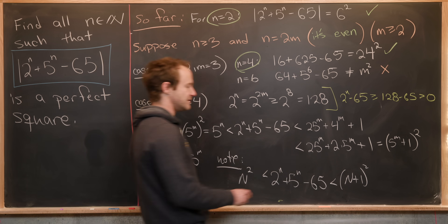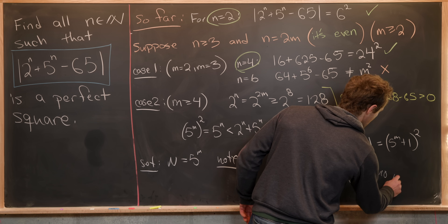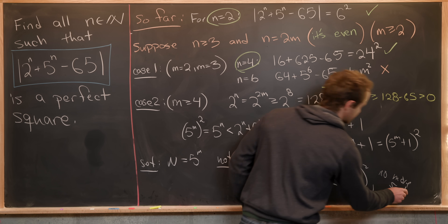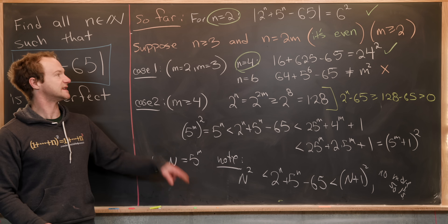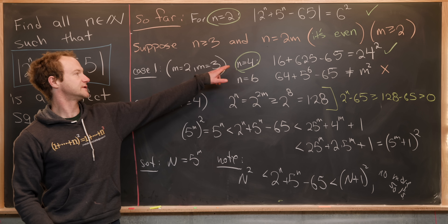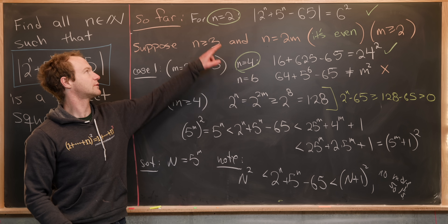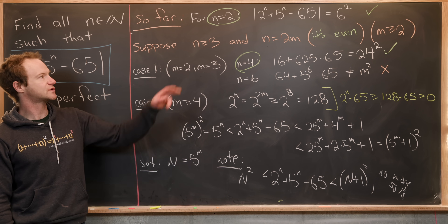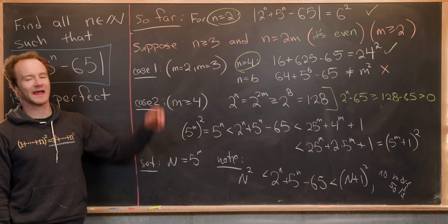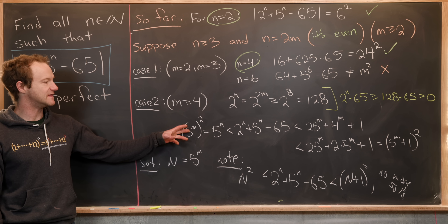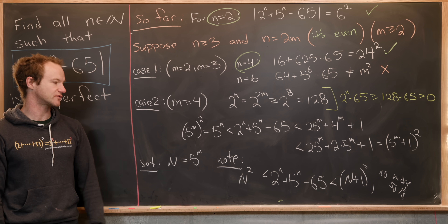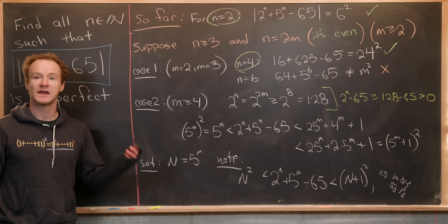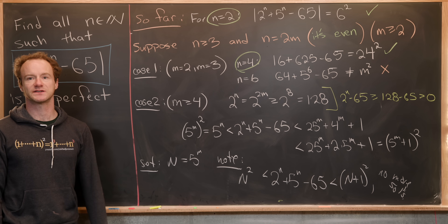So there are no more solutions. In summary, we found two solutions: n equals 2, giving 6 squared, and n equals 4, giving 24 squared. The squeezing argument shows there are no solutions for m greater than or equal to 4, and that's a good place to stop.